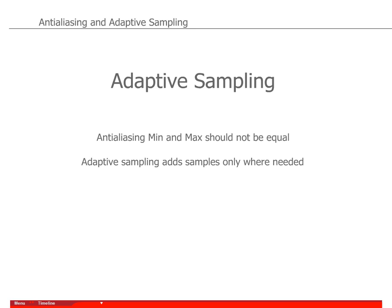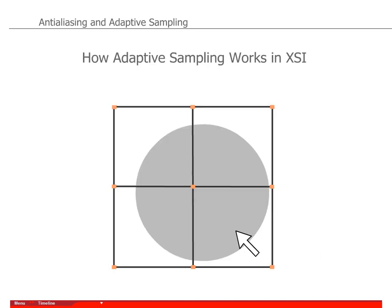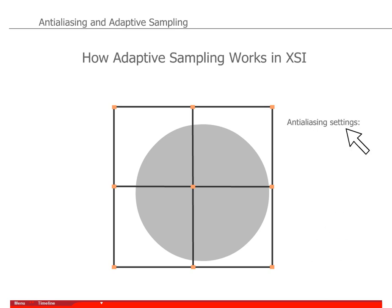Let's go over the adaptive sampling and exercise how it works. This is four pixels with a very small geometry that covers these four pixels — the renderer trying to render this particular image. We have ANSI using settings of 0 up to 3, so we really have a range now. It's not minimum and maximum being the same value, but really starting with a difference of 3. Because it's starting at 0, every one of those pixels will be sampled once.